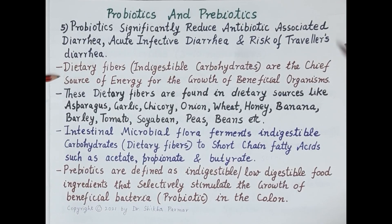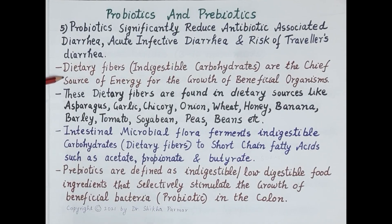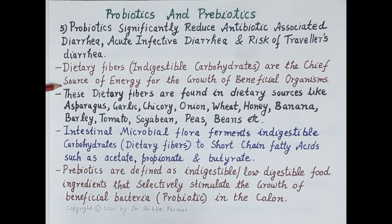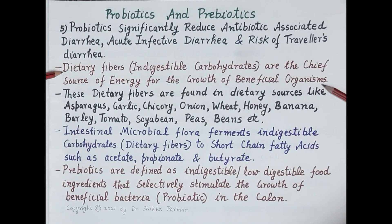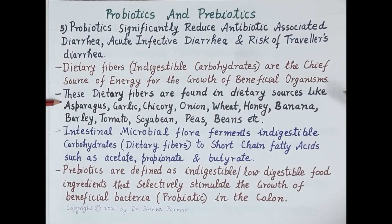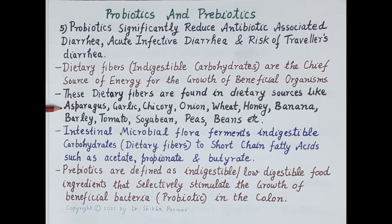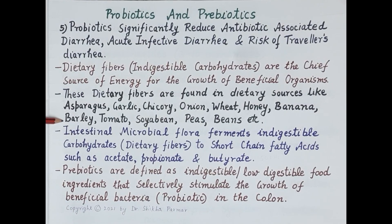It is very important to understand that dietary fibers, which are indigestible carbohydrates found in dietary sources, are the chief source of energy for the growth of beneficial microorganisms in the gut. These beneficial microorganisms depend on dietary fibers for their growth. Dietary fibers are found in sources like asparagus, garlic, chicory, onion, wheat, honey, bananas, barley, tomato, soya bean, and peas — all of which are very high in dietary fiber content.